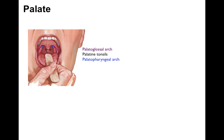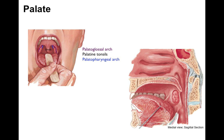And then there's our uvula sitting at the back from the soft palate. Now let's take a look at a medial view of a sagittal section. There's our hard palate, there's our soft palate, and then our palatoglossus arch courses from the soft palate to the tongue — hence the name. And then our palatopharyngeus courses from the palate to the oropharynx, and right in between is the palatine tonsils.